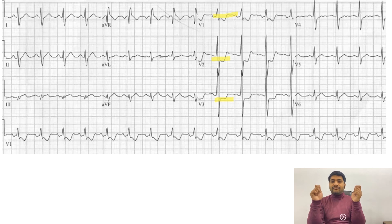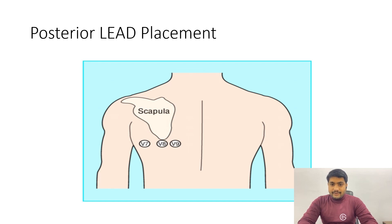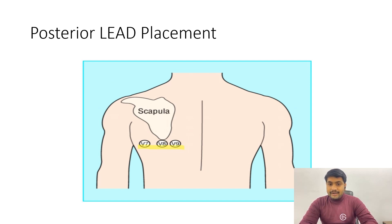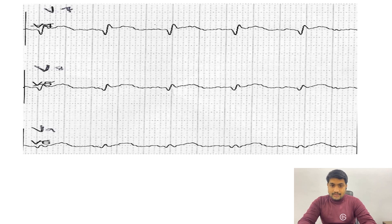We can confirm the diagnosis of posterior wall MI by placing leads V4, V5, and V6 on the back of the patient to obtain leads V7, V8, and V9 — marking V4 as V7, V5 as V8, and V6 as V9. On the ECG obtained, we will start seeing ST segment elevation because now those leads are right above the area of infarct.